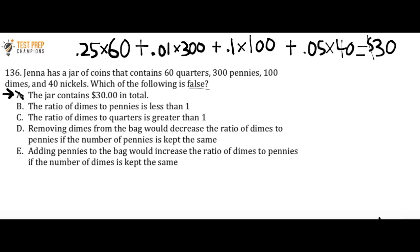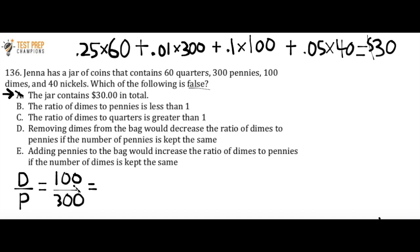D over P equals 100 over 300. To check if B is true or false, I take the number of dimes, which is 100, and divide by the number of pennies, which is 300. You can just do 100 divided by 300 in your calculator and you'll see the ratio of dimes to pennies equals 0.333 repeating. Since 0.333 is less than 1, B is a true statement. So I'm going to take it out because we're looking for which of the following is false.